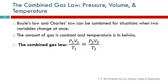So here is a mathematical statement of the combined gas law. P1V1 over T1 is equal to P2V2 over T2. This is assuming that the amount of gas is constant, that we're not putting more gas in or letting any gas out. And as with all gas problems, the temperature has to be in kelvins.